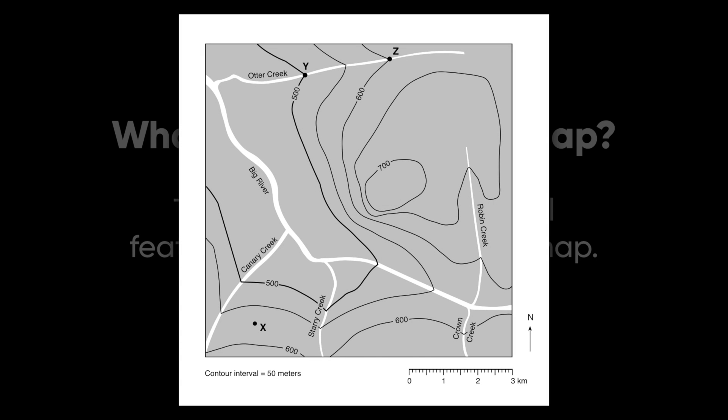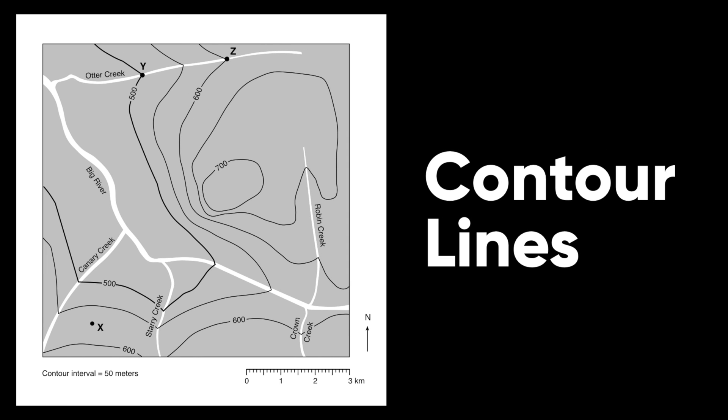So let's take a look at an example. Here you can see a simple topographic map, often called a contour map. And the feature that should jump out to you on this map are all of these dark squiggly lines all over the place. Those lines end up being the key to topographic maps. They're called contour lines.